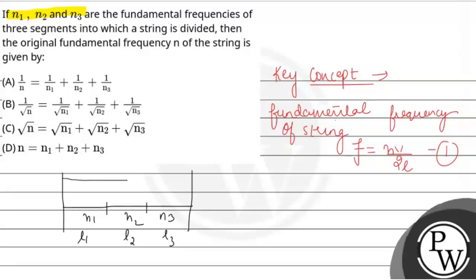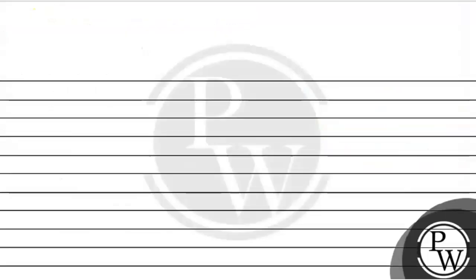They asked what will be the fundamental frequency of the original string. So we take the total length as L and its fundamental frequency as n. Now let's write the individual frequencies. Then we will solve for the fundamental frequency of the original string. Let's see the fundamental frequencies of different parts.